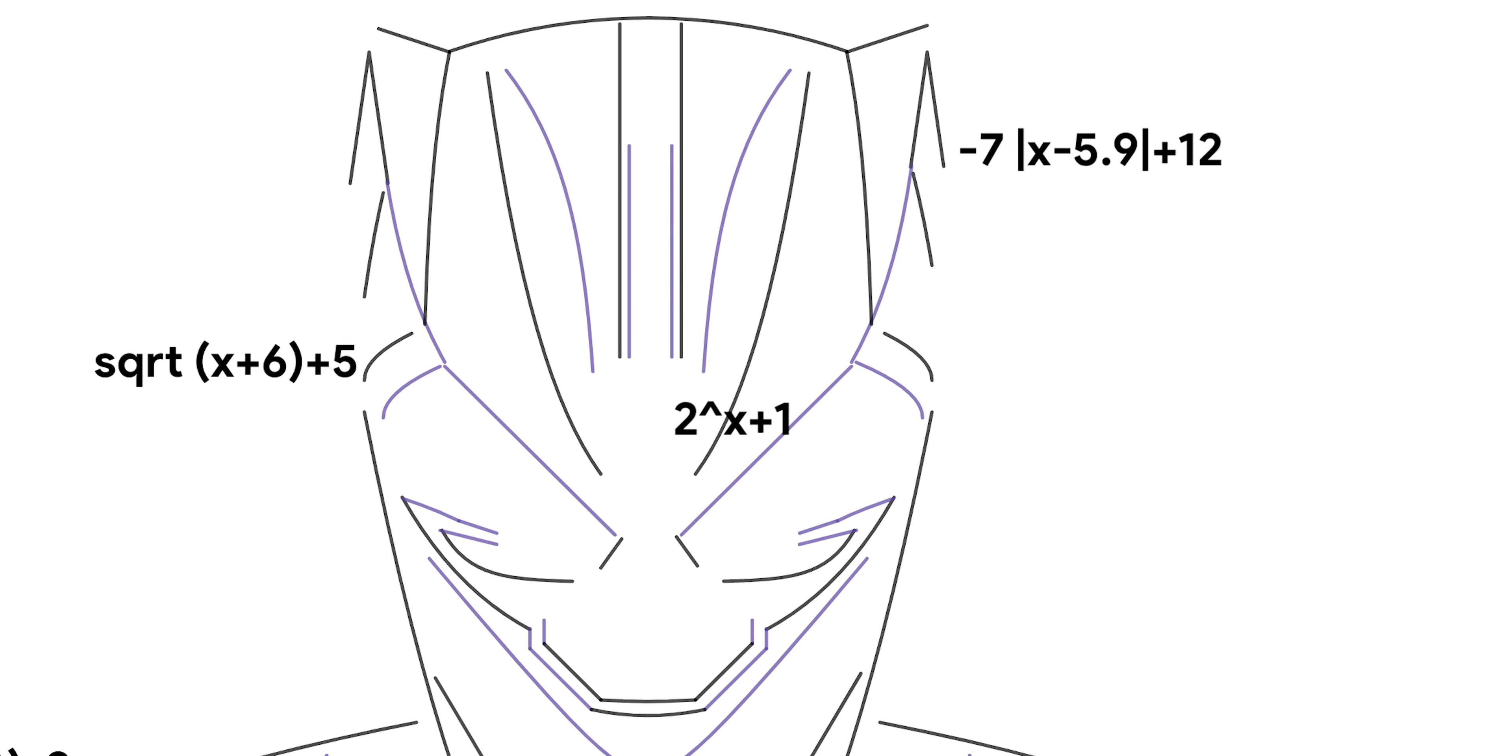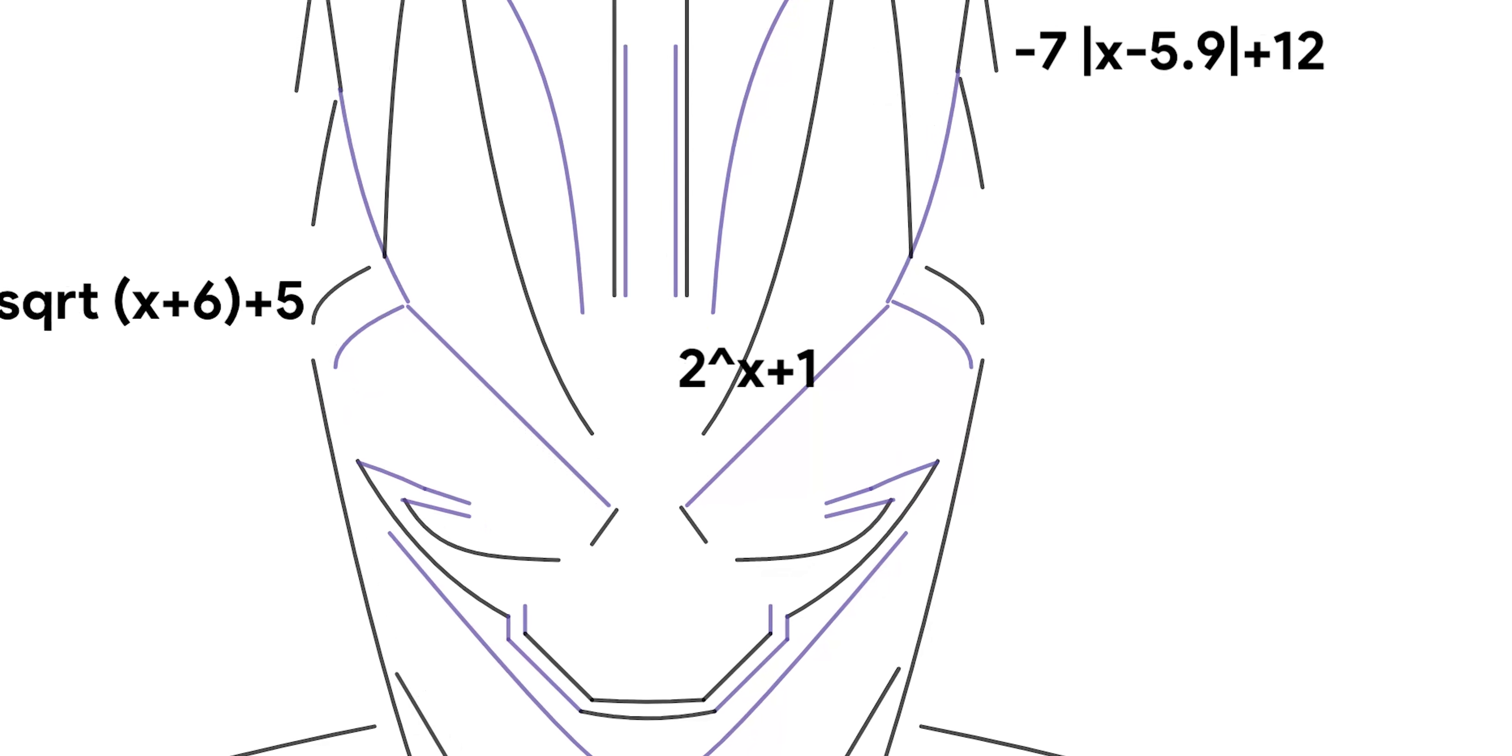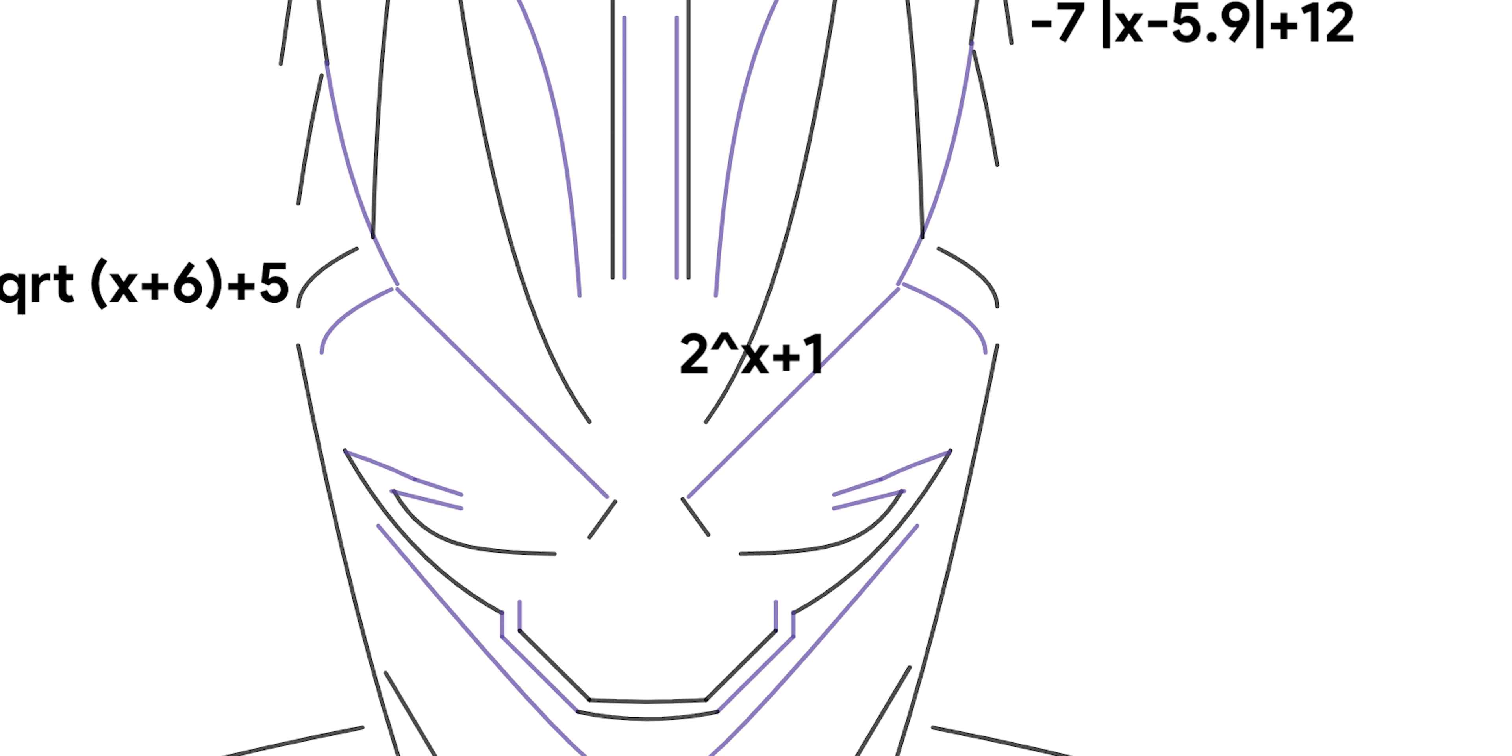Fourth, I did 2 to the x plus 1. What do you think this means? Well, it means that I simply went up 1, not left 1. If I wanted to go left 1, I would need to put the c in parentheses with the exponent x. The function represents the Black Panther suit's forehead.